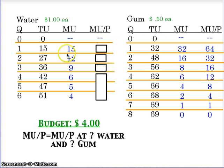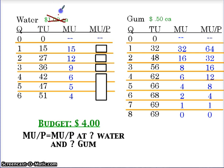So we go back to the numbers again, and what I'm going to do is change something. I'm going to change the price of water from a dollar to, let's say, 50 cents per bottle. Where did I get that number from? All I wanted to do was change the price of water — it was kind of a random choice, dropping it from a dollar to 50 cents.